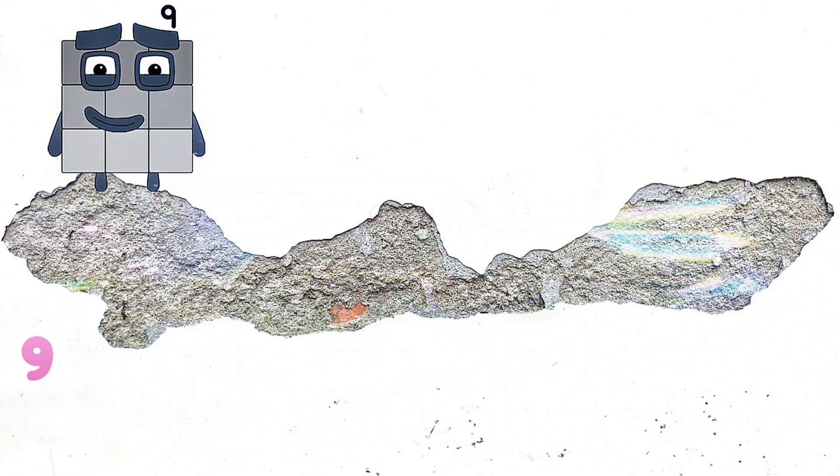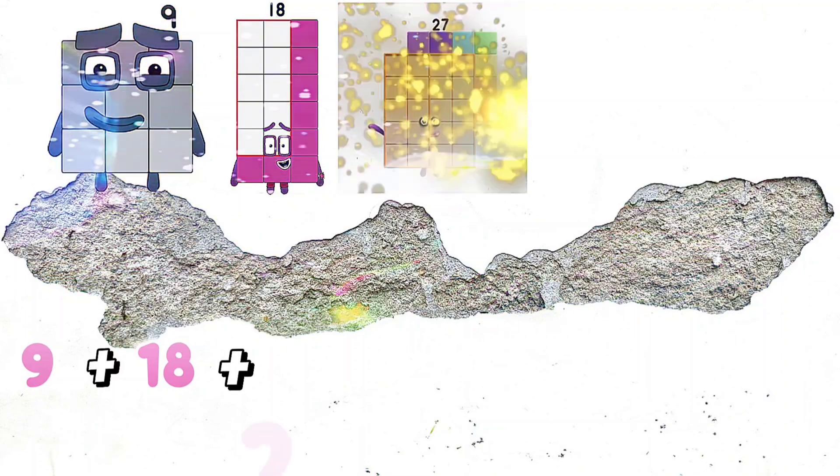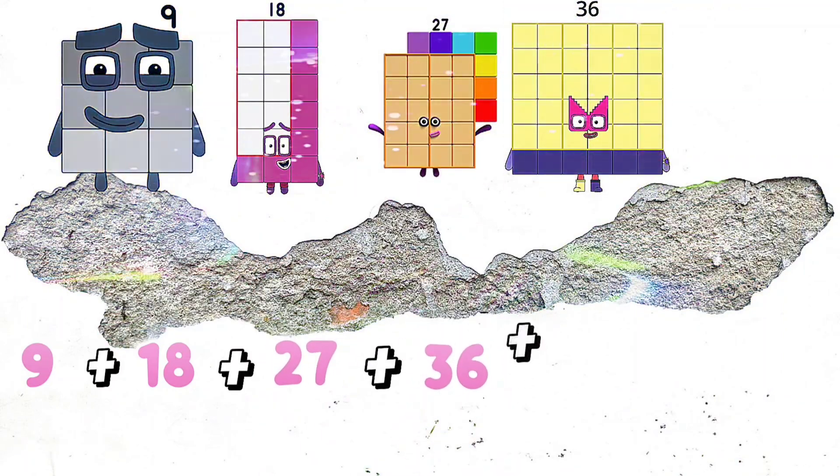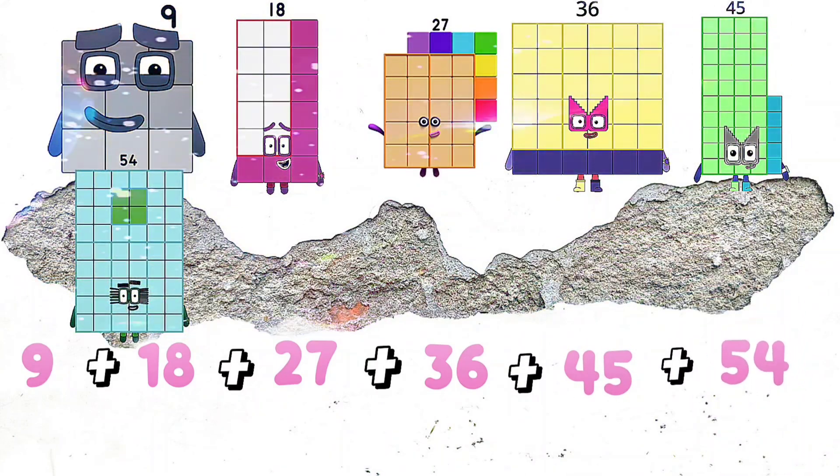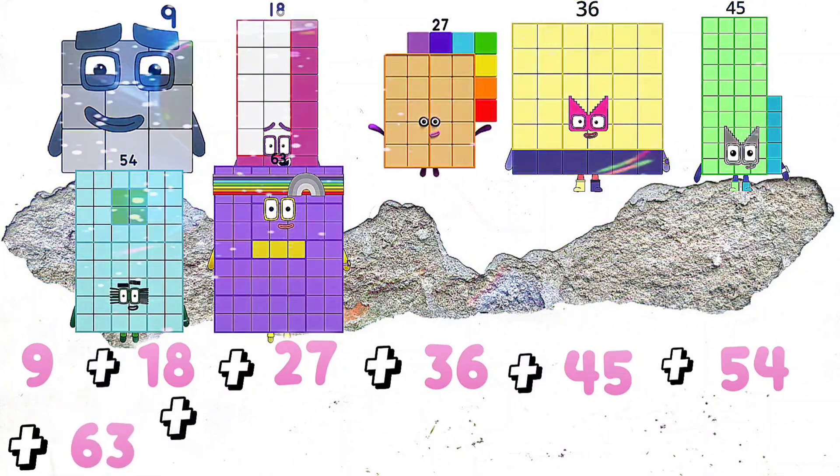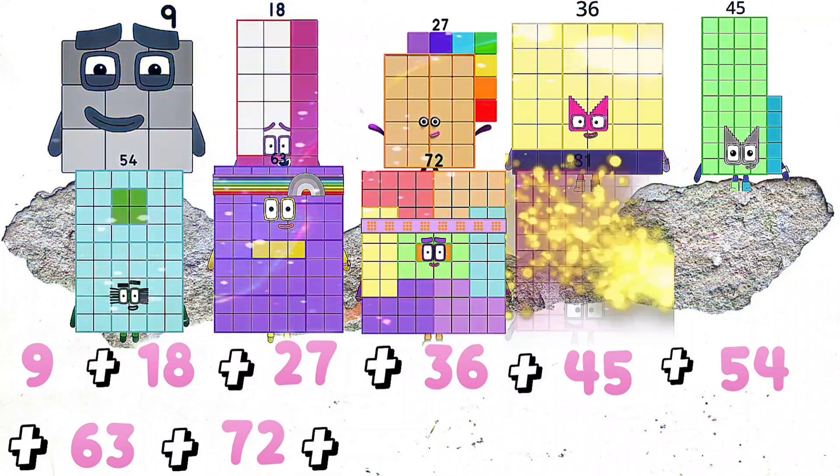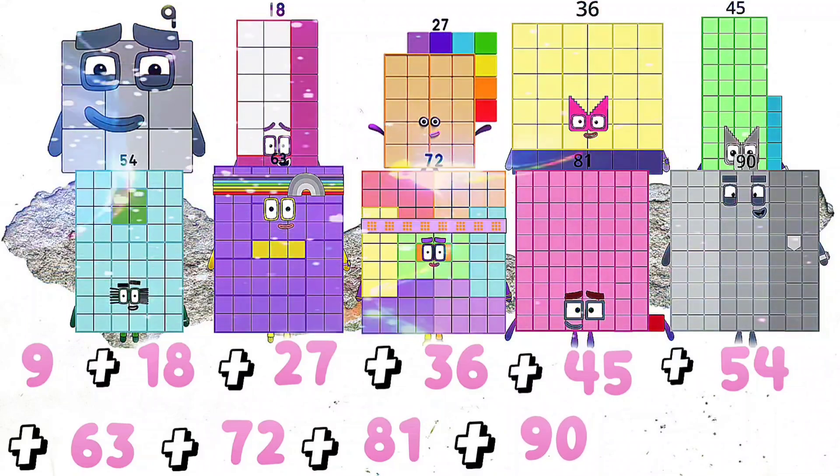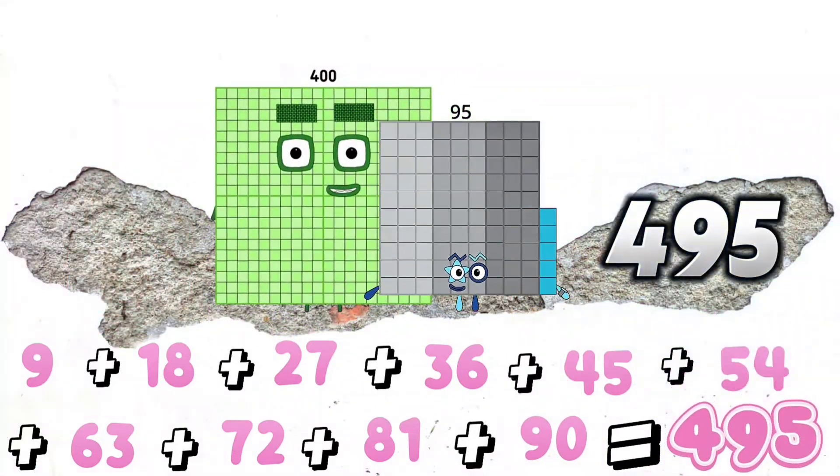9 plus 18 plus 27 plus 36 plus 45 plus 54 plus 63 plus 72 plus 81 plus 90 is equals to 495.